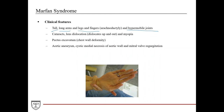One physical exam finding is the wrist sign: in a normal individual, when they try to put their fingers around their wrist, they barely touch. In a patient with Marfan syndrome, the fingers overlap, and that's called the wrist sign. You can also appreciate the characteristically long fingers in these patients. These patients often develop cataracts and lens dislocations — in Marfan syndrome, the lens dislocates up and out, which helps differentiate it from other disorders that cause lens dislocation.